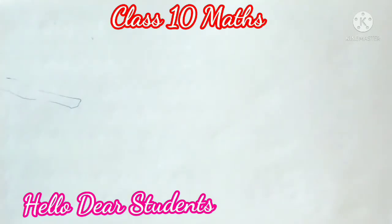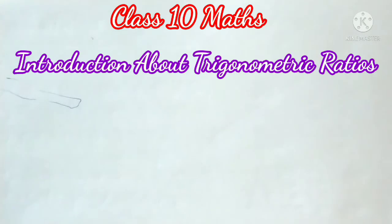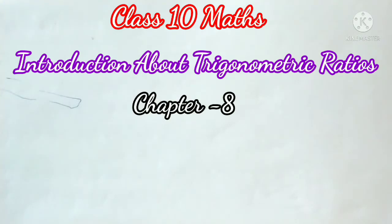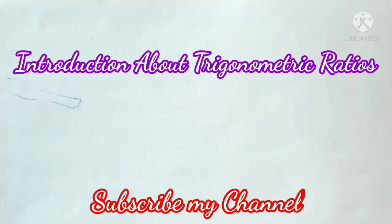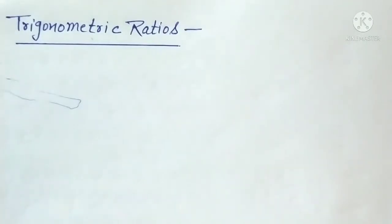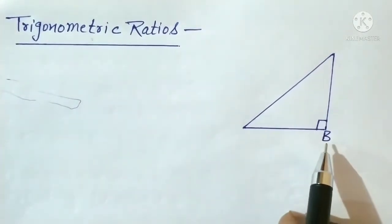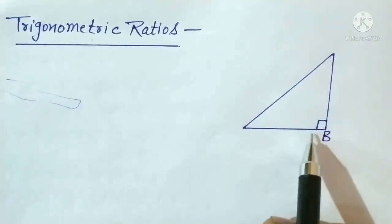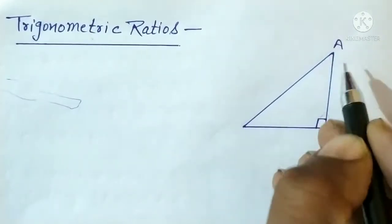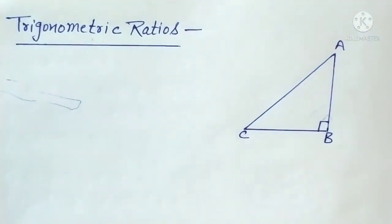Hello dear students, welcome to my YouTube channel. Today we discuss trigonometric ratios related to chapter number eight, which is Introduction to Trigonometry. To find trigonometric ratios, first we need a right angle triangle. We will take a right angle triangle and then find the trigonometric ratios corresponding to a given angle. We have triangle ABC, right angled at B, where angle B is 90 degrees. We will find trigonometric ratios for both angle A and angle C one by one.